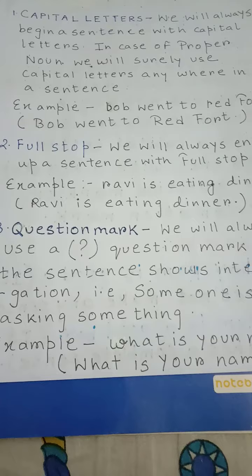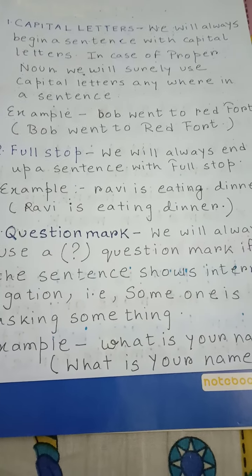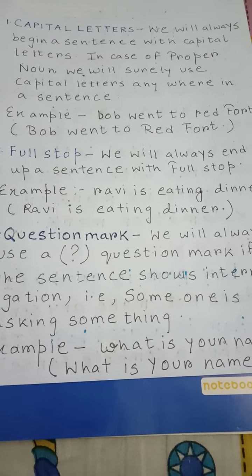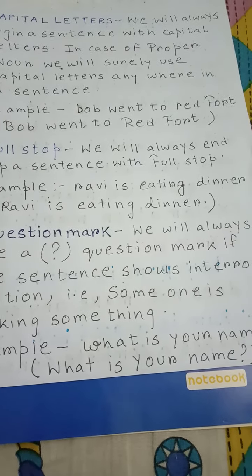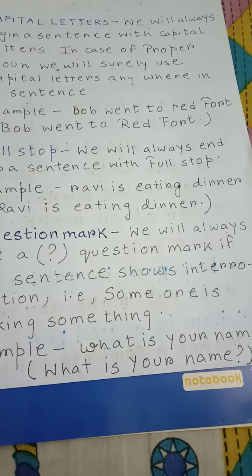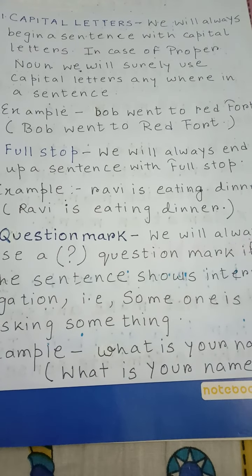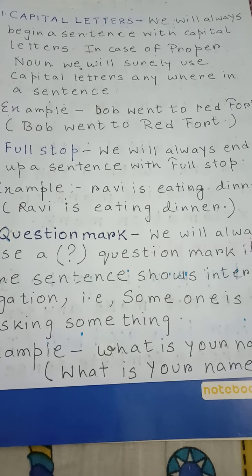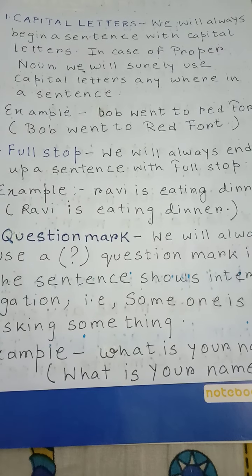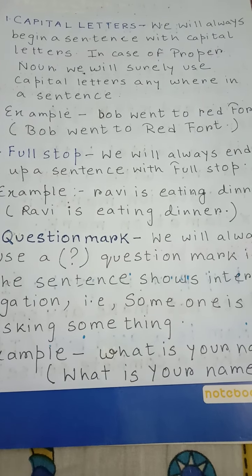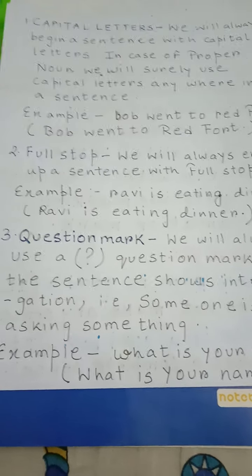Number 2: Full stop. When to use full stop? We will always end a sentence with a full stop. Example: 'Ravi is eating dinner.' We can see in the first line there is no full stop. But we have to write it correctly: 'Ravi is eating dinner.' R will be in capital, and after finishing the sentence, we have used a full stop. This is the actual way of writing.